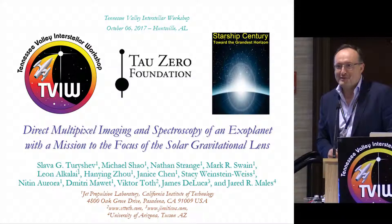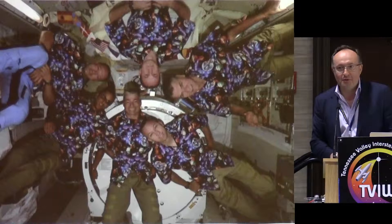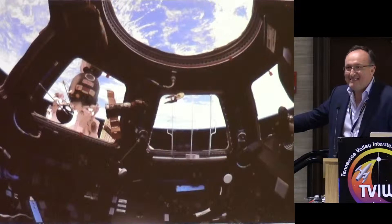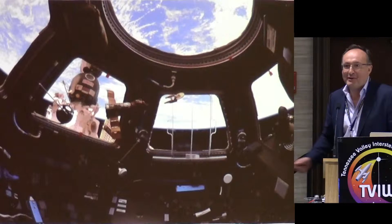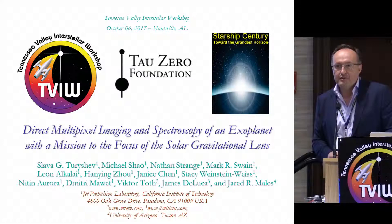That message came, of course, from the space station. Our friends on the space station congratulate us with this wonderful event. And to signify the importance of our meeting, they actually sent this picture. This is the Enterprise. The beginning of the space era, the Sputnik is here. And of course the Enterprise is there, showing the way to the future. Maybe this way to the future will be through the gravitational lens, which I will be discussing today.